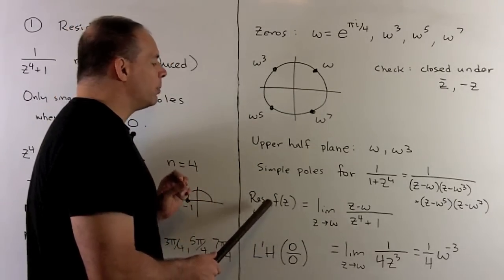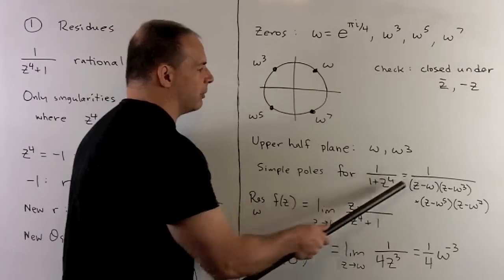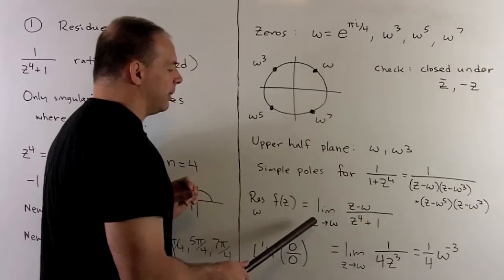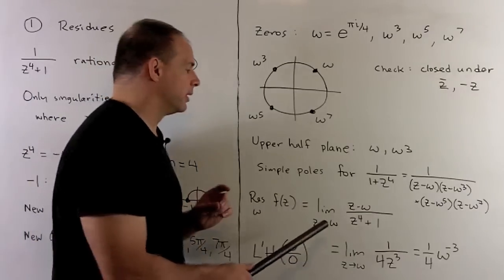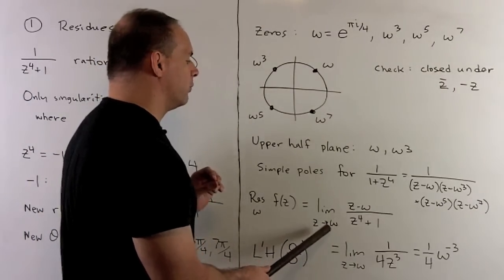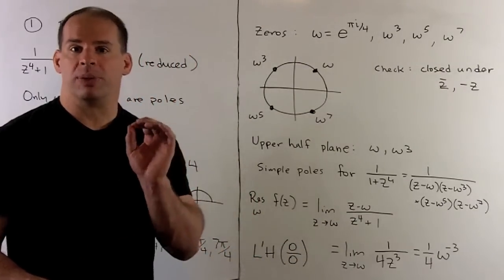We're going to multiply by z minus omega. So, that would do our canceling before, but the idea is to take the limit as z goes to omega instead, instead of doing the straight evaluation. Now, if you notice, if we evaluate this at omega, we get 0 over 0. So, L'Hôpital's rule applies.